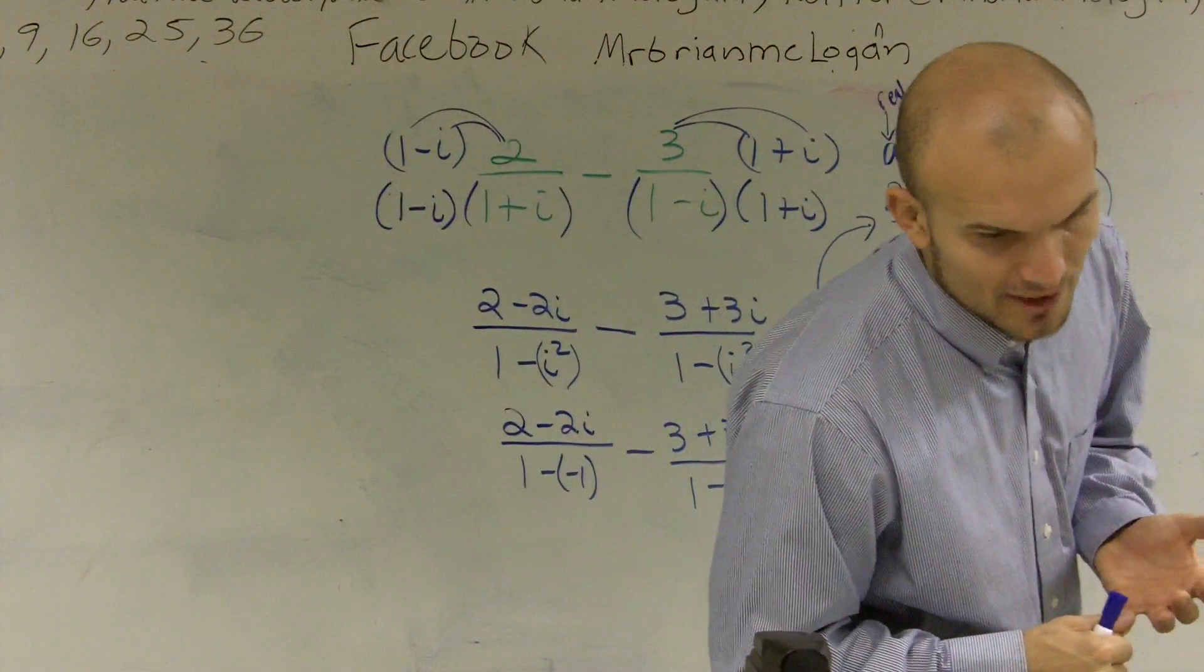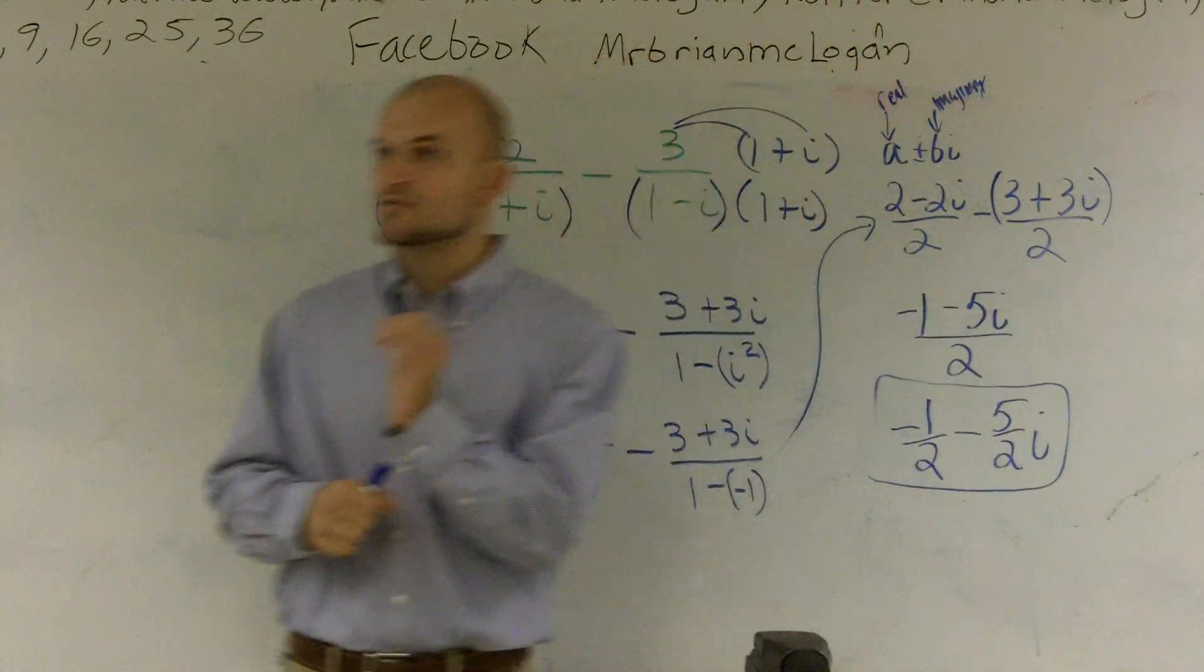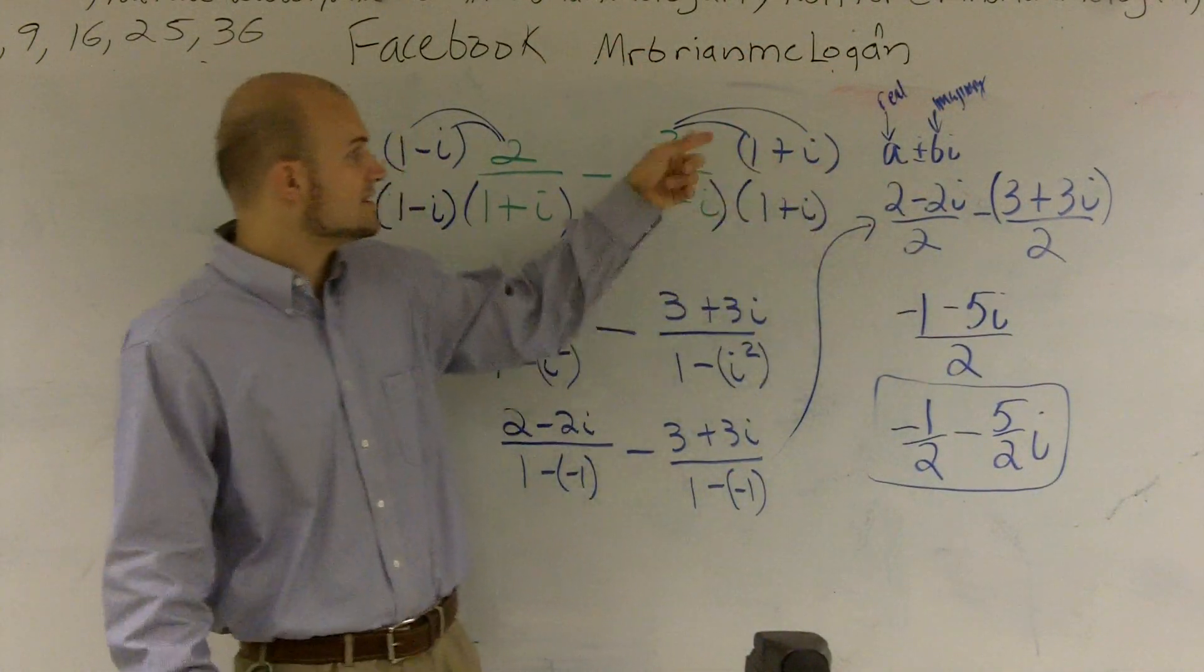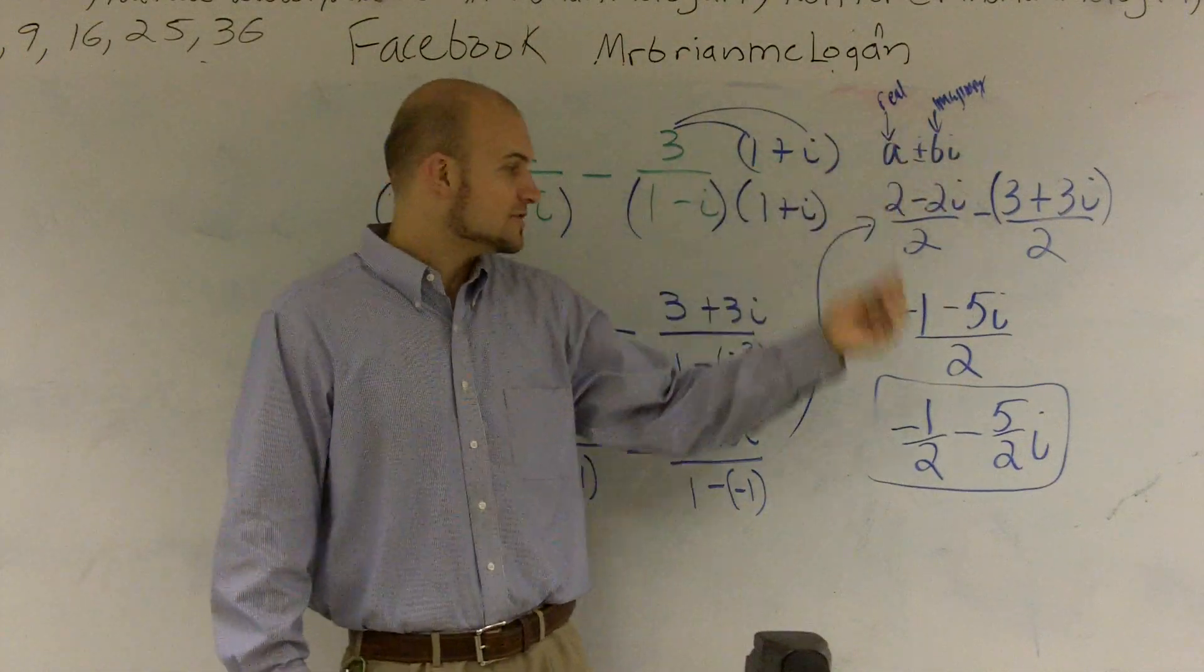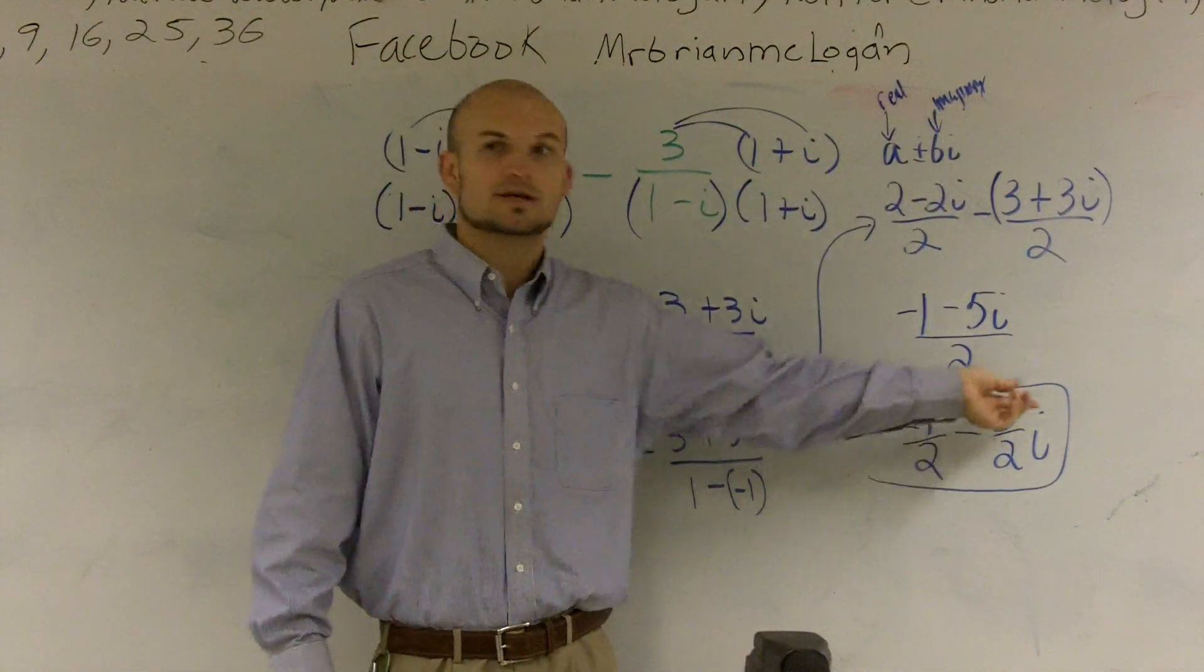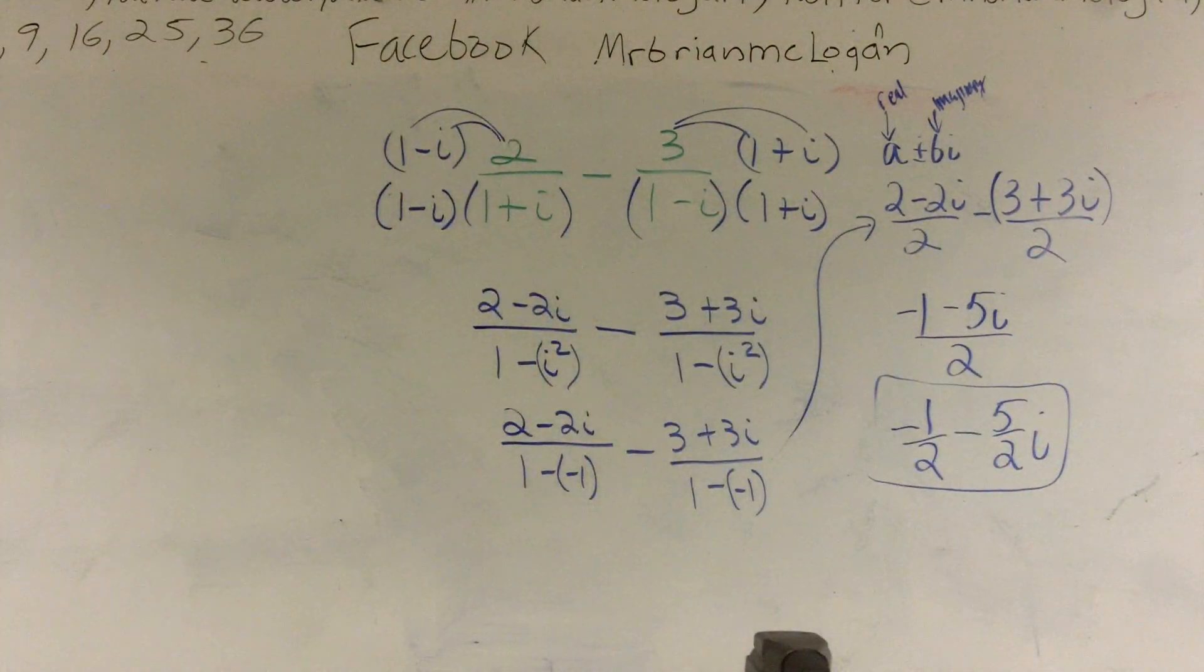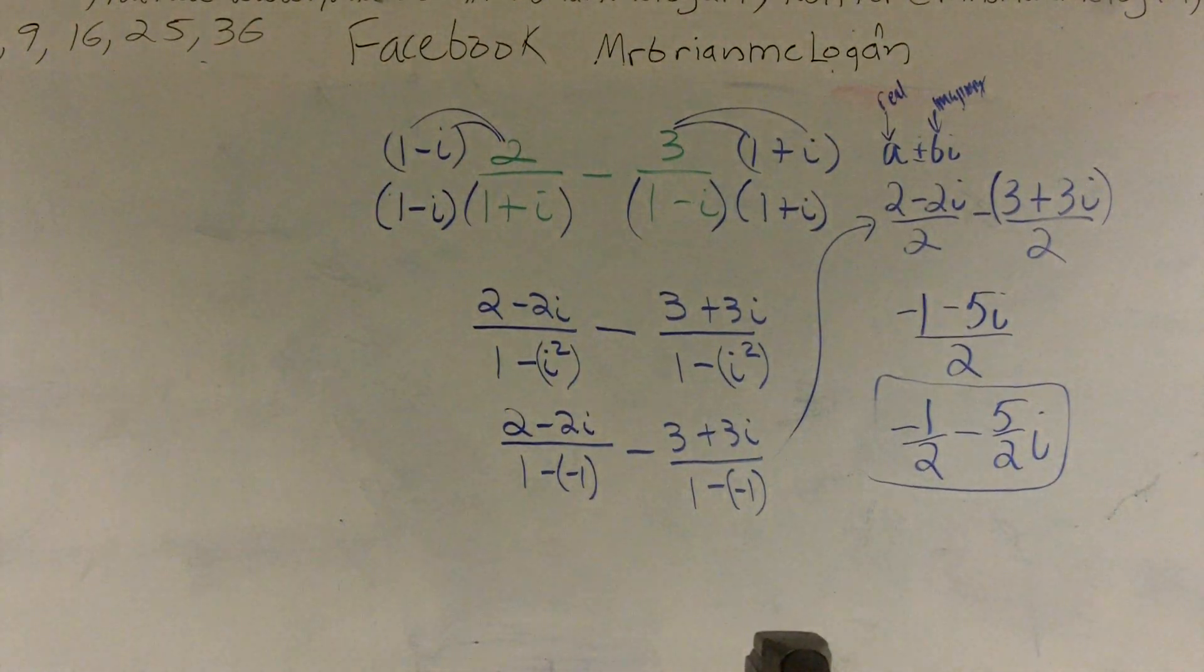It said to perform the operation and write the result in standard form. This is not standard form. Right? Standard form is a plus bi. So you have to have a real number plus imaginary number. Make sense? Right? And you'd only know that if you...